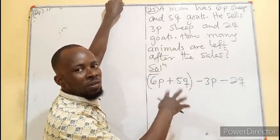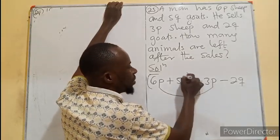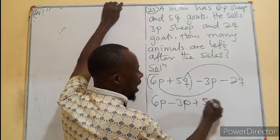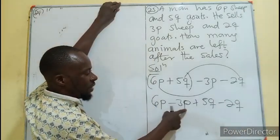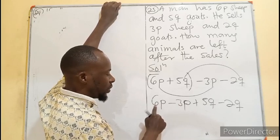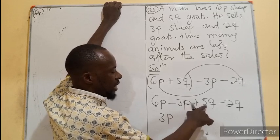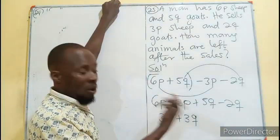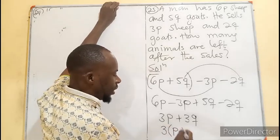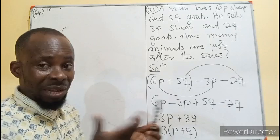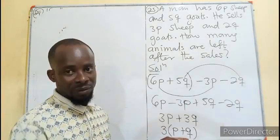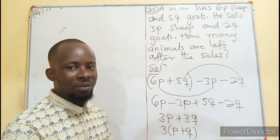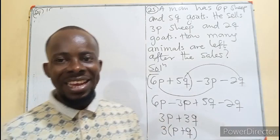This becomes an algebraic expression where the p's and q's are like terms. Six p minus three p gives three p, and five q minus two q gives three q. So the answer is 3p + 3q, or factorized as 3(p + q), meaning three sheep and three goats are left after the sale. Thank you for watching — like, share, and comment. Bye!